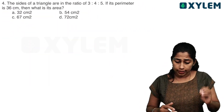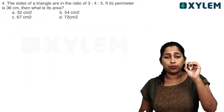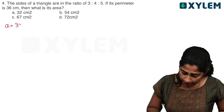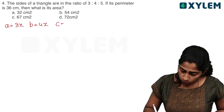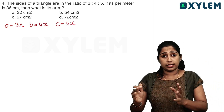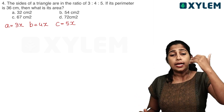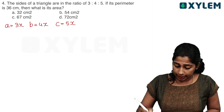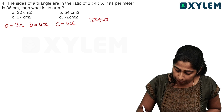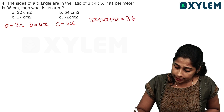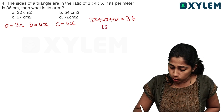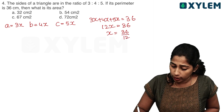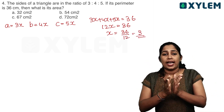Let's go to the next question. The sides of the triangle are in the ratio 3 to 4 to 5. We let a equals 3x, b equals 4x, c equals 5x, since the ratio is the same when multiplied by x. The perimeter is 36, so 3x plus 4x plus 5x equals 36. That is 12x equals 36, so x equals 3.